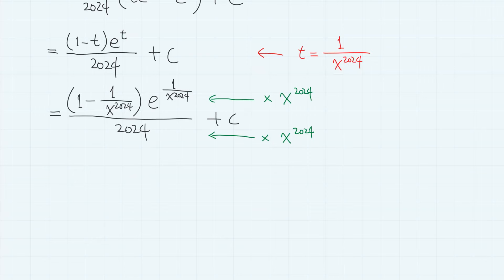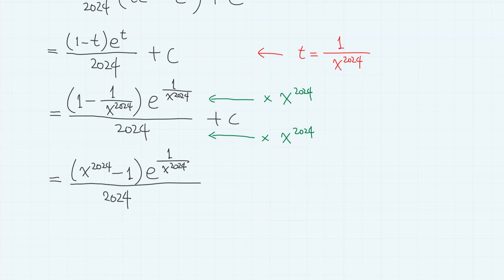So if we change the variable back to x, we have (1 minus 1 over x^2024) times e to the power of 1 over x^2024, divided by 2024 plus c. Multiplying through by x^2024 to simplify the complex fractions gives us (x^2024 minus 1) times e to the power of 1 over x^2024 divided by (2024 x^2024) plus c.